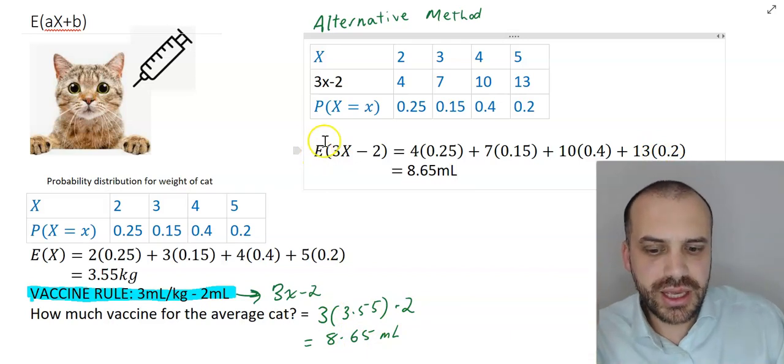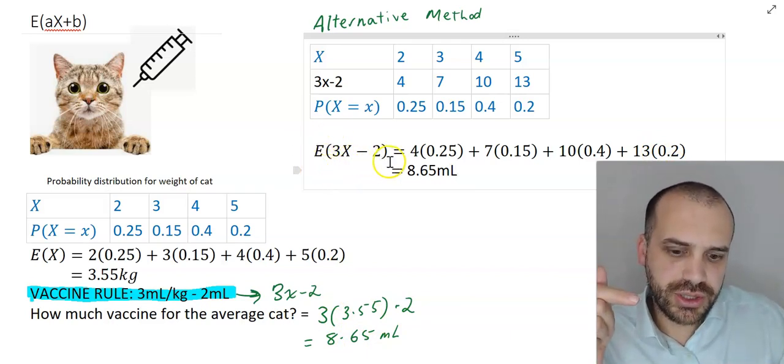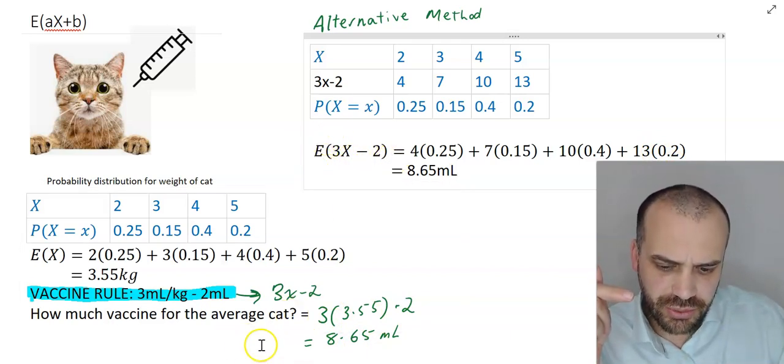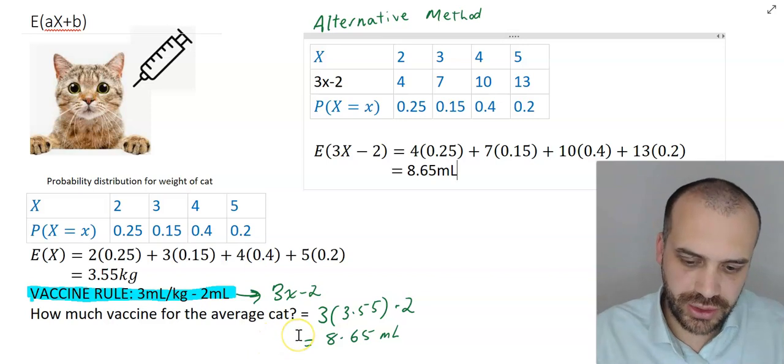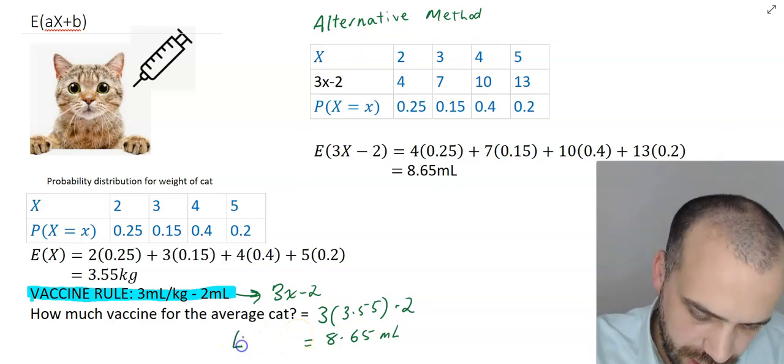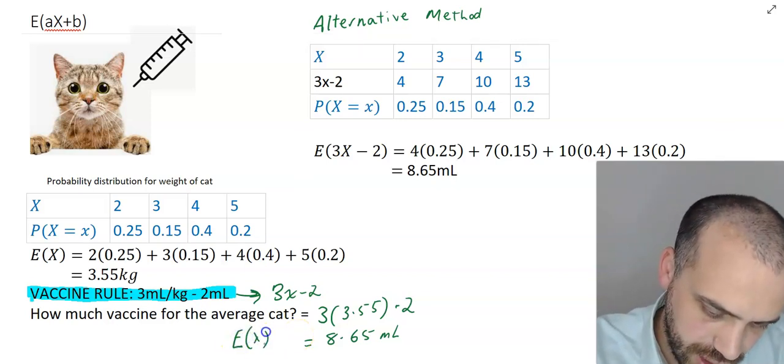Now this represents E, 3x minus 2. What does this represent? Well, remember what we did in the beginning. We calculated the expected value. That is, we calculated E, x.